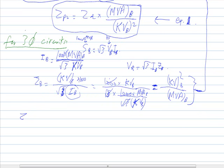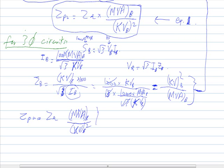The per unit impedance for three-phase circuits is the same formula: the actual impedance multiplied by the MVA base divided by the kilovolt base squared — identical to single-phase circuits. They are identical to each other.